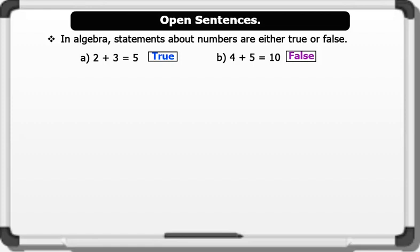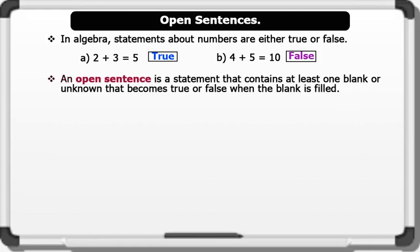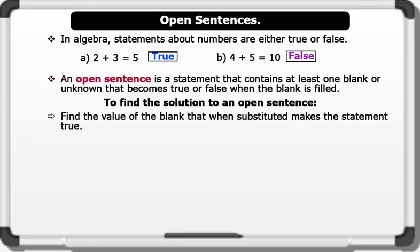Therefore, an open sentence is a statement that contains at least one blank or unknown that becomes true or false when the blank is filled. Note that to find the solution to an open sentence, we find the value of the blank that when substituted makes the statement true.